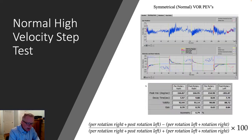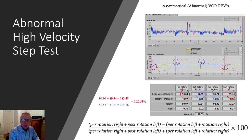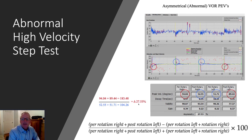And we're going to compare that for right versus left. So we look at the right stimulus conditions and the left stimulus conditions, and we compute an asymmetry response much like we do with caloric, and we get a VOR difference.